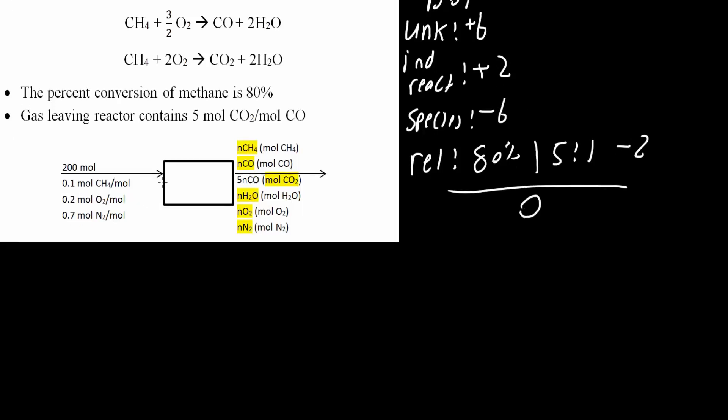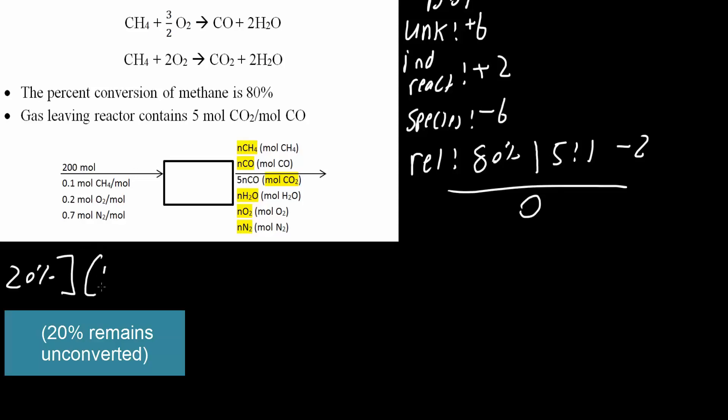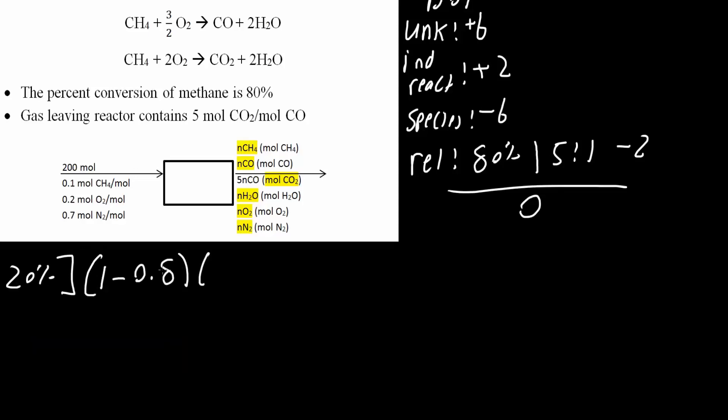So let's do that. First, we will do the relationships. So I could say that the whole 20% thing would be one minus 0.8 times 20, 20 because 200 times 0.1 would give us 20 moles of CH4. And so this would equal four moles of CH4 in our product.